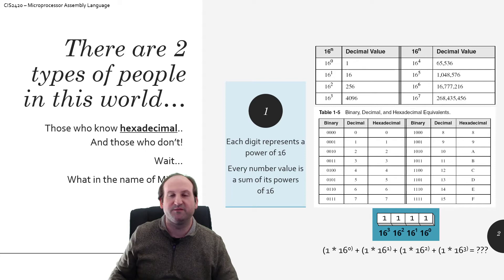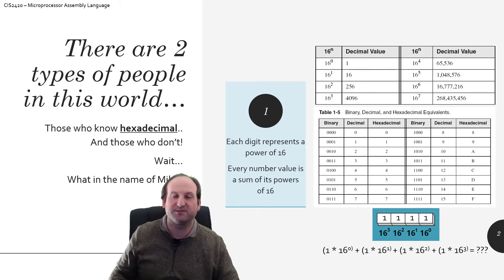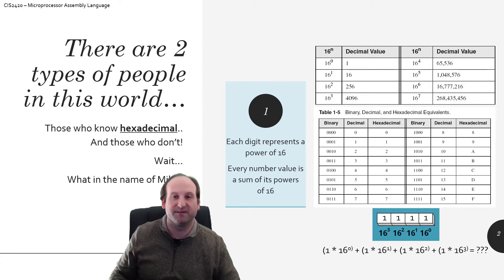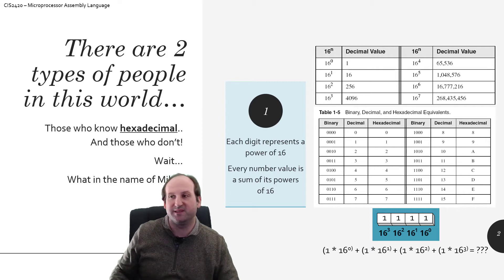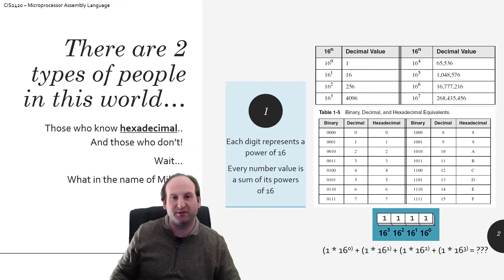These charts will take you very far in your understanding of the relationships between binary numbers, decimal numbers, and hexadecimal numbers — the topic of this video. Every digit of a number in hexadecimal is a power of 16, just like a binary number is a power of 2, and a decimal number is a power of 10.